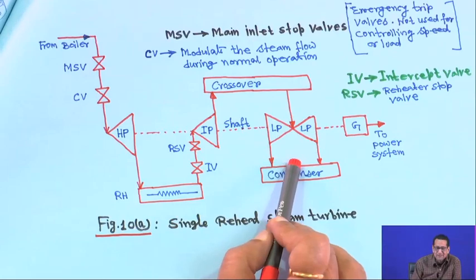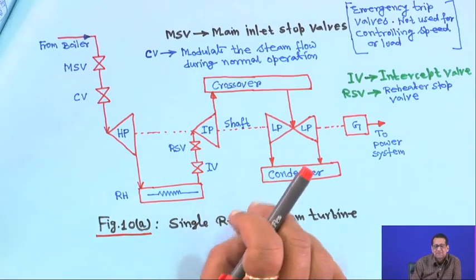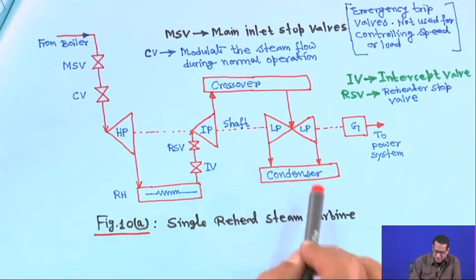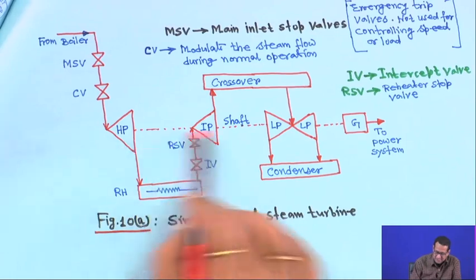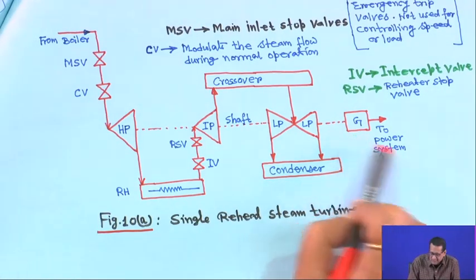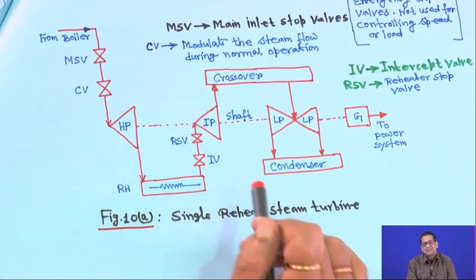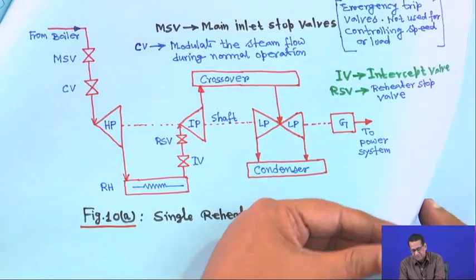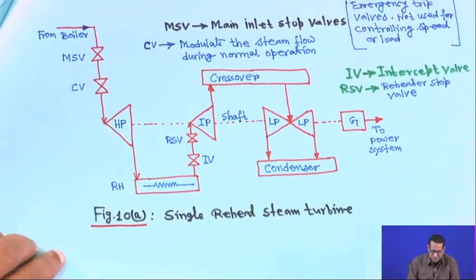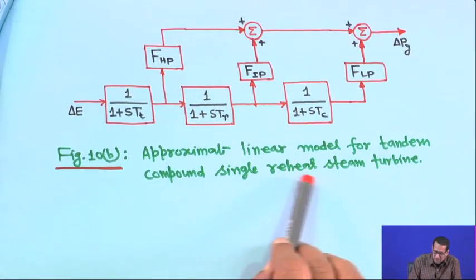From this, we must make the block diagram or control system representation. The key point is that a delay is associated with each section, and every section — high pressure, intermediate pressure, and low pressure — generates some fraction of the total power. We assume a lossless turbine, so total power fractions sum to 1. This gives an approximate linear model for the tandem compound single reheat steam turbine.